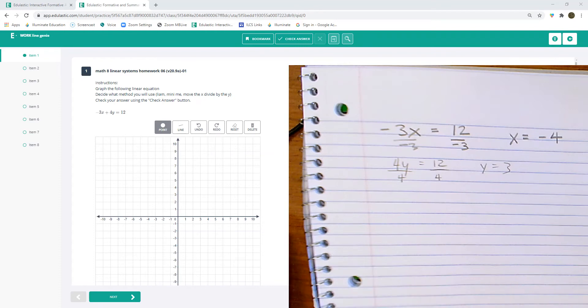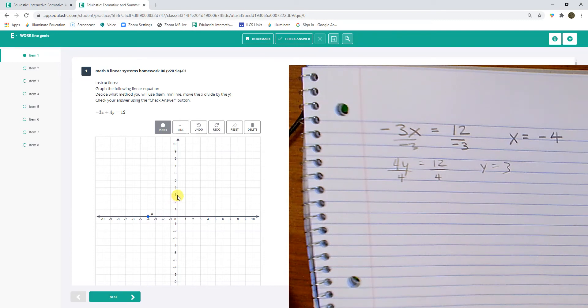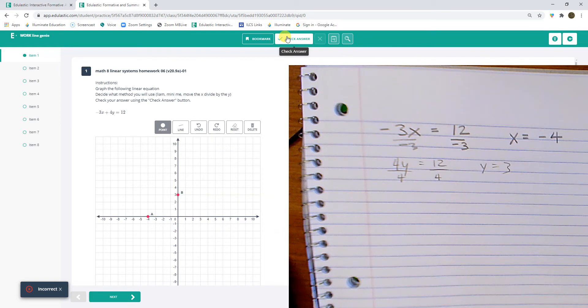So y equals 3. Okay, so there are my intercepts. I have an intercept at negative 4 on the x and 3 on the y. And let's check that answer. And let's reset it.